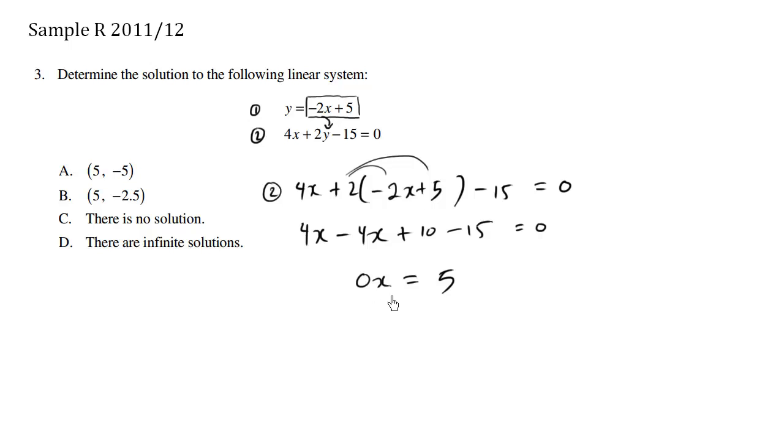So the question is, what x value satisfies 0x equals 5? There is no answer. Choose any x. Let x equals 2. 0 times 2 is 0, it does not equal 5.